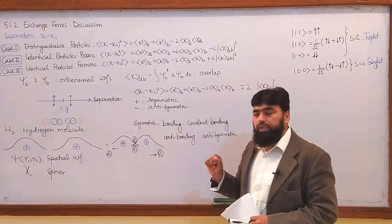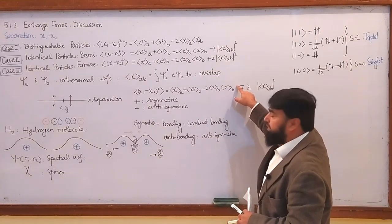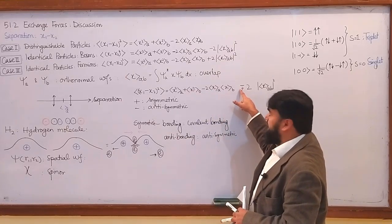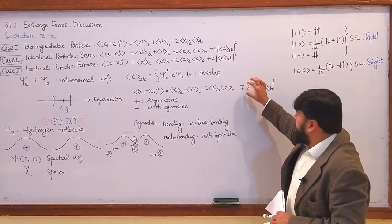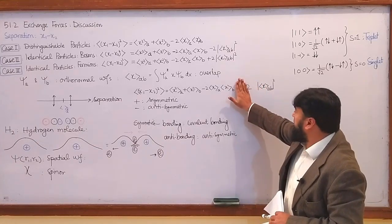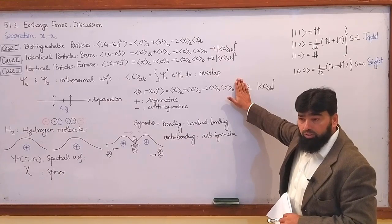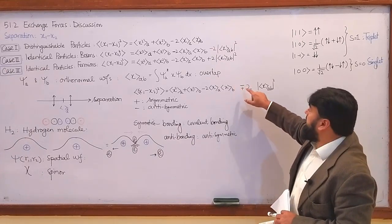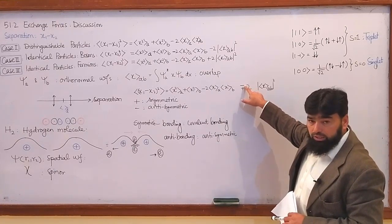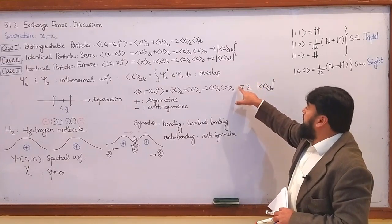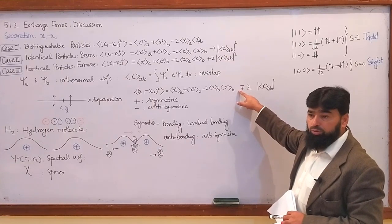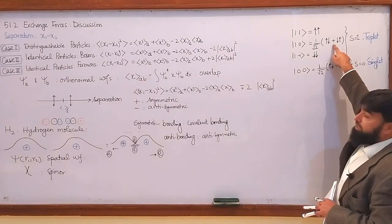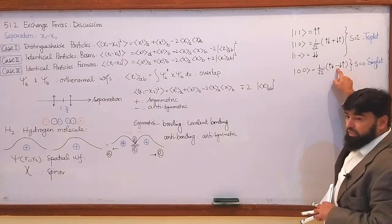When you have a plus sign, the wave function will be symmetric. When you have a minus sign, the wave function will be anti-symmetric. For fermions we are having the plus sign in the spatial part (symmetric), and for bosons the minus. But we need to connect this to the symmetric and anti-symmetric terminology: when it is plus, this is the symmetric wave function; when it is minus, this is the anti-symmetric wave function.